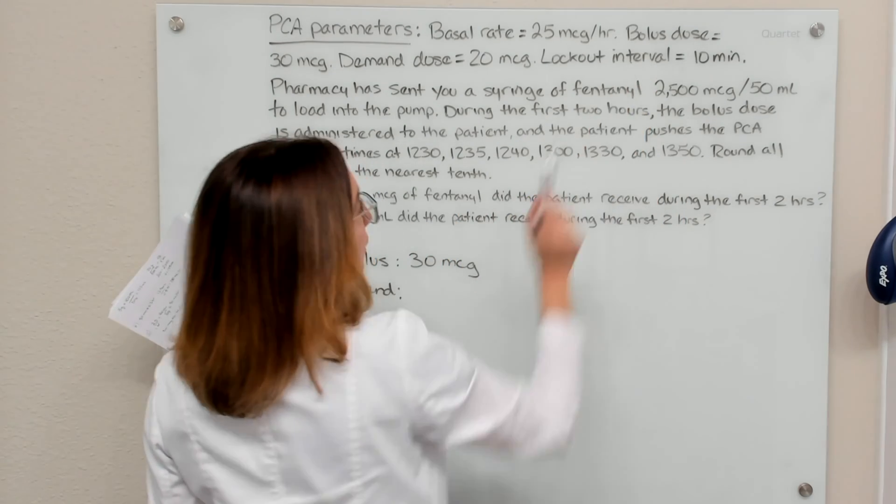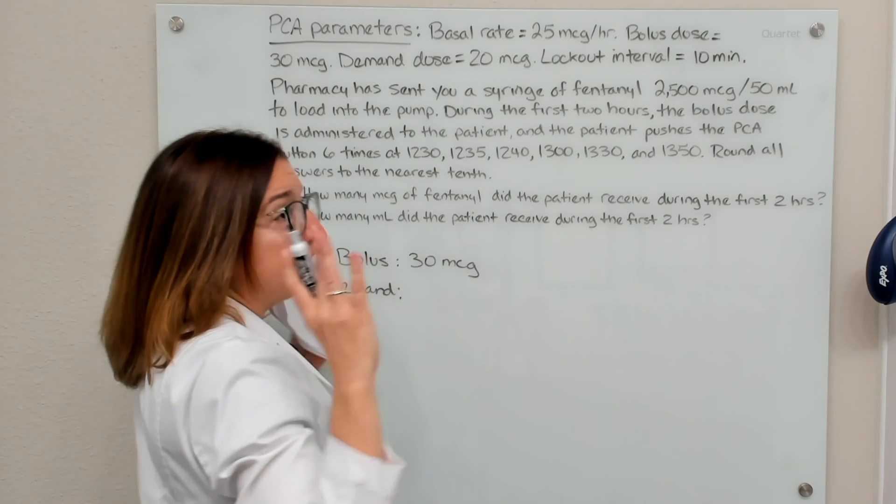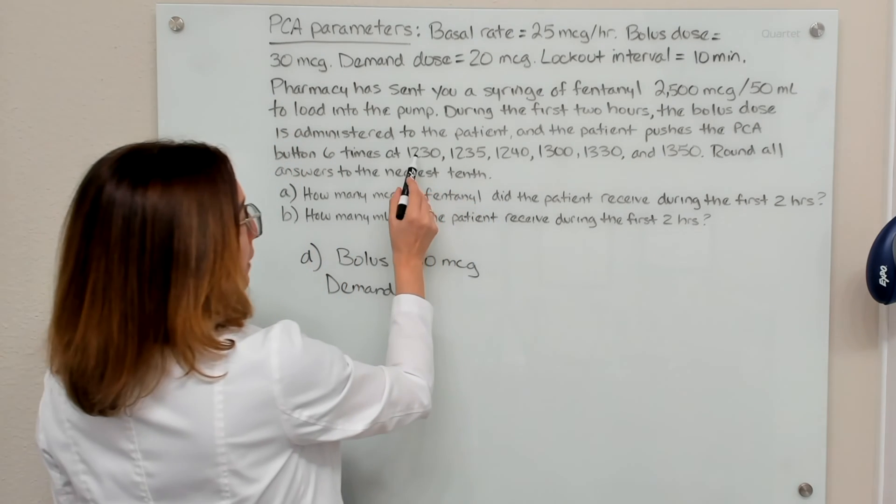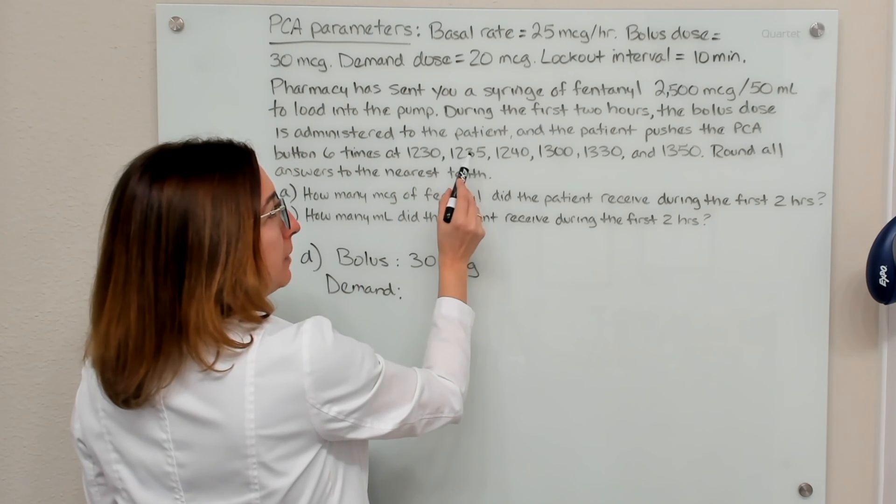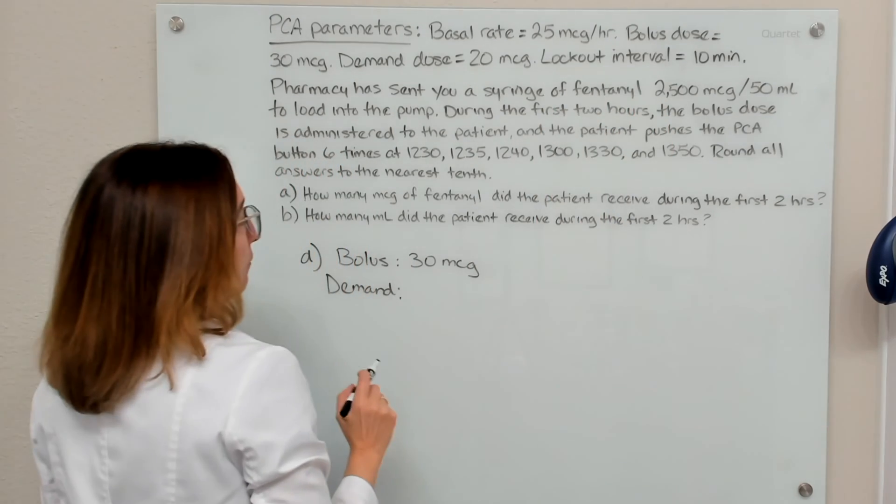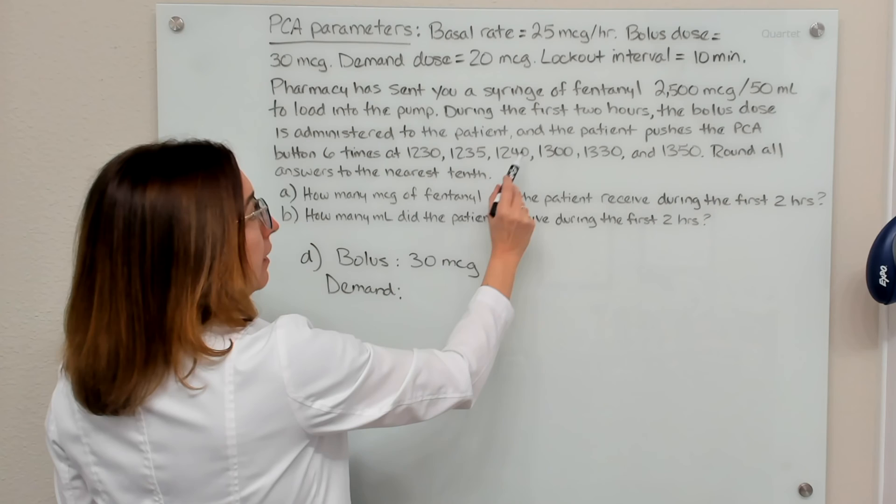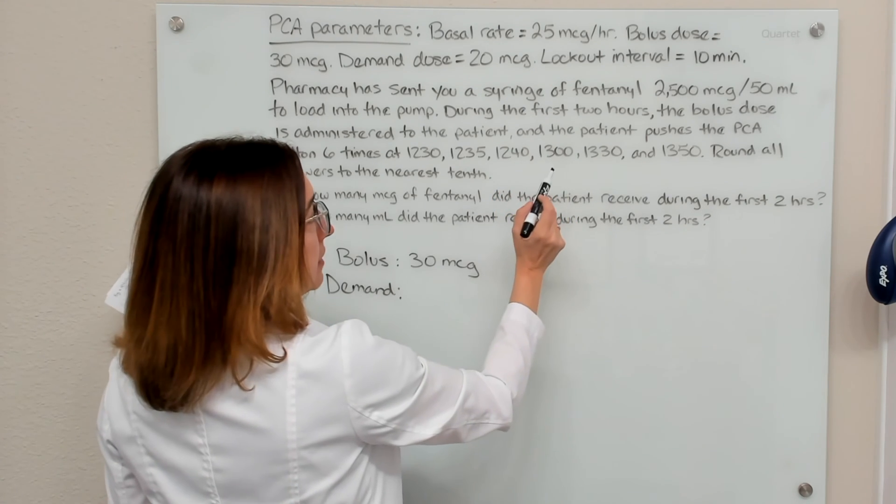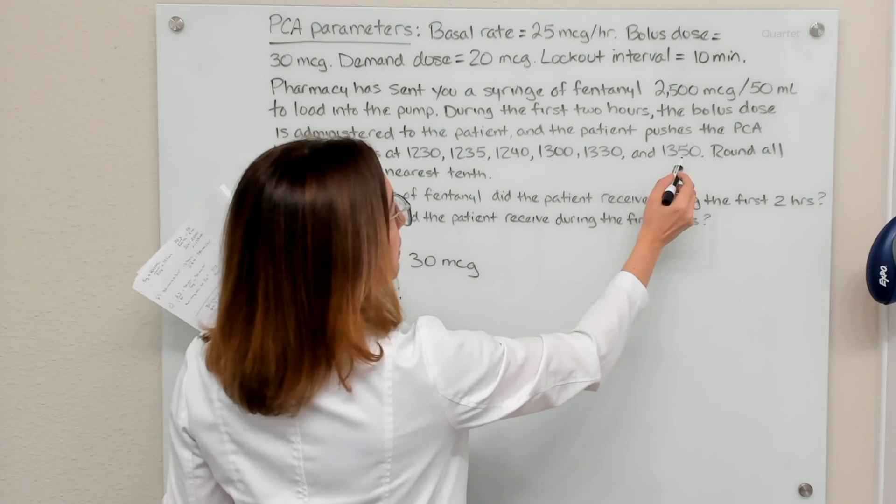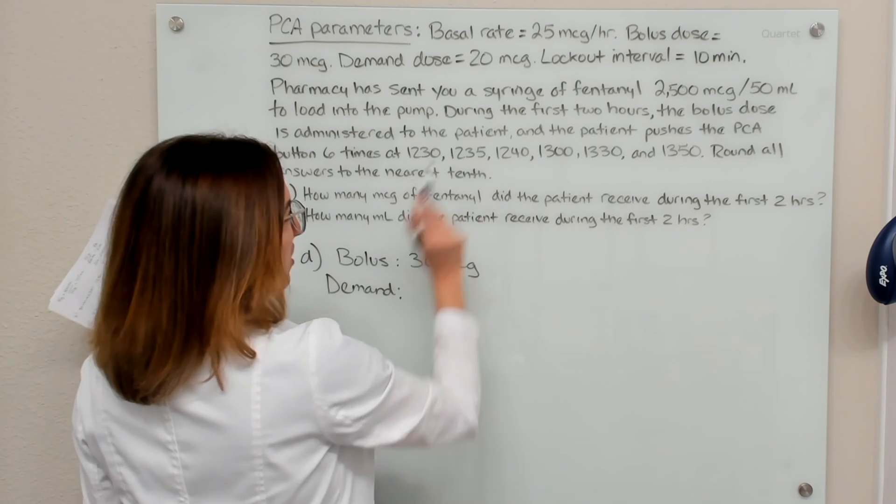However, we have a lockout interval of 10 minutes. That means after they push the button, there are 10 minutes where they will not get a dose, even if they push the button. So they push the button at 12:30, they push it at 12:35. But at this time, a dose was not administered because we were within that lockout interval. Then they got their dose at 12:40, that's fine. 1:00, that's fine. 1:30, that's fine. And 1:50, that was 20 minutes from the last dose. So 12:35 is the only dose they did not receive.